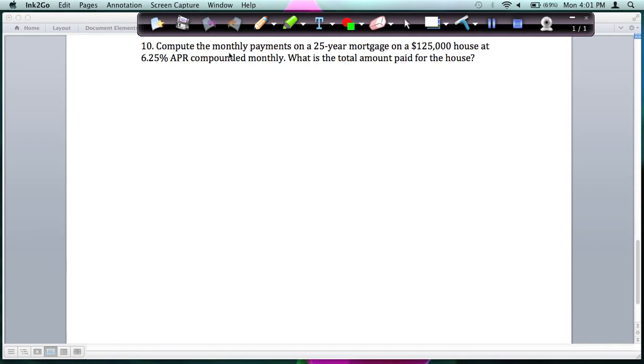The problem says compute the monthly payments on a 25-year mortgage on a $125,000 house at 6.25% APR compounded monthly. What is the total amount paid for the house?